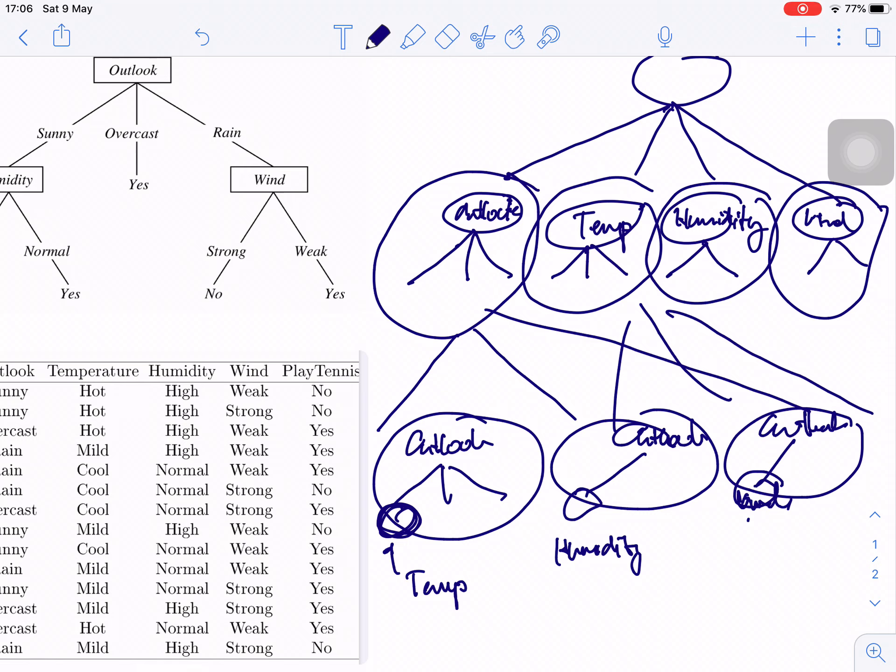But in the real world, maybe the attributes, like we have more attributes than this: 20, 40, and each attribute has more values, not 3 or 2 like in our example. So the tree can be very huge. So you cannot trace all the tree to build the tree using all possibilities. So how can you do it?